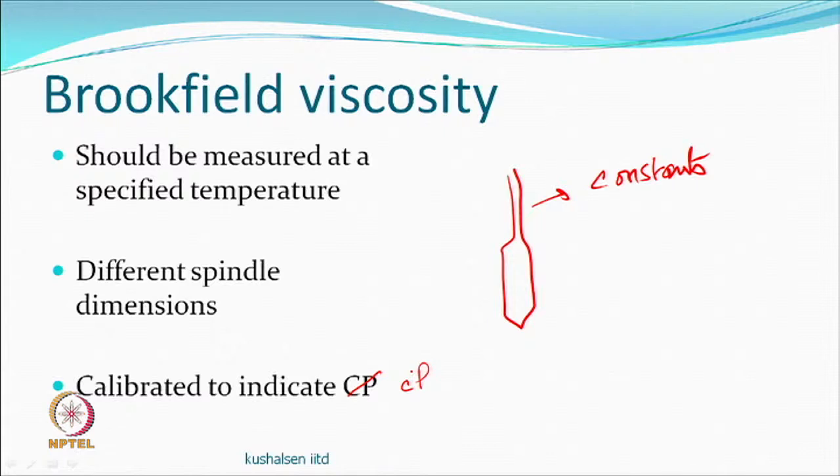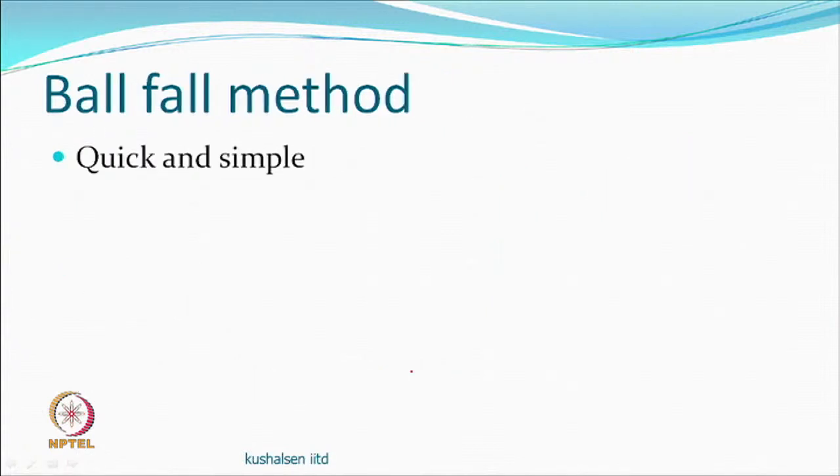For situations where a Brookfield viscometer is not available, there is the ball fall method. You take a solution in a jar, drop a steel ball, and measure the time required for the ball to travel from one marked point to another. In the capillary method, the solution moved; here the solution is stationary and the ball moves relative to it, experiencing resistance. More viscous solutions yield longer fall times. People sometimes just report the time directly as a comparative indicator — longer time means more viscous.